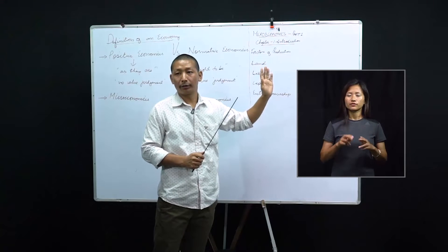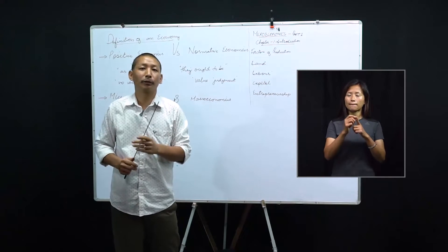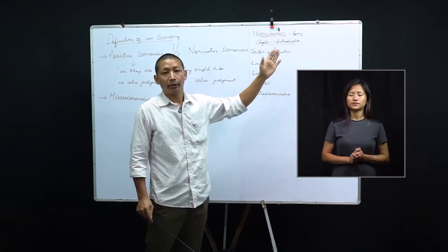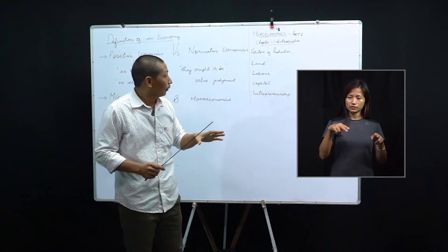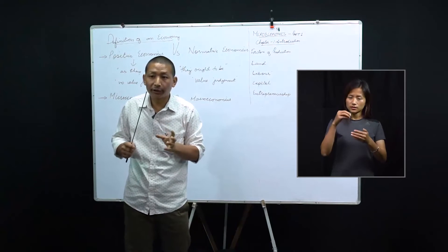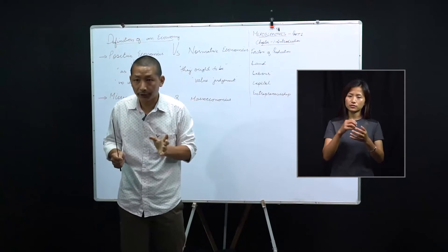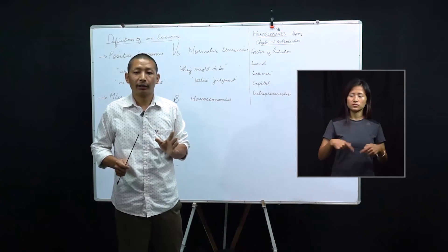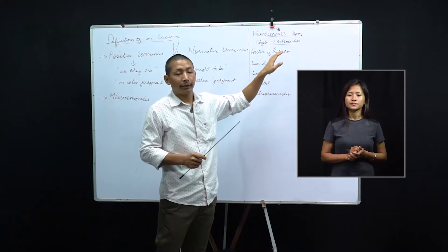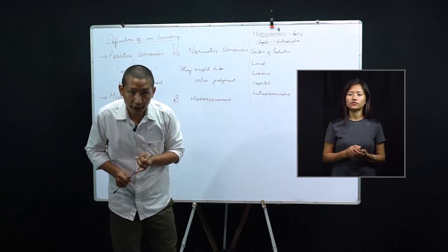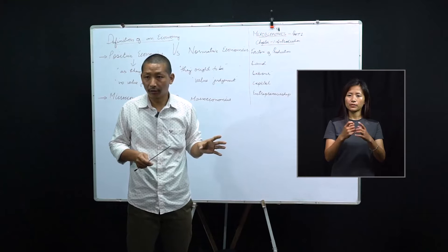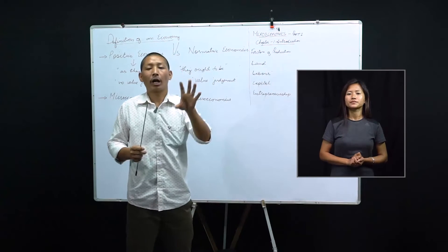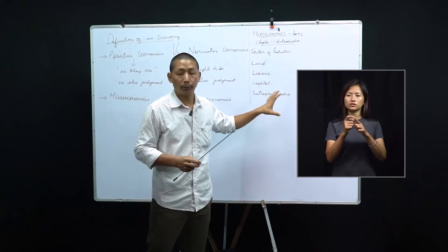We have factors of production — this is very important. You are taking up economics, and if you do not know the meaning of factors of production, you will be a laughingstock. Factors of production refers to the required inputs or resources needed for the production of goods and services in the economy. The resources are: land, labor, capital, and entrepreneurship. A production unit will use all of these to produce a single commodity.